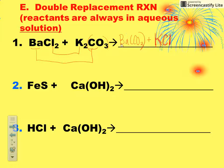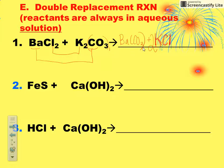Let's go back and check it. We've got one barium here and one barium here. Two chlorines here, so we put a 2 in front of the potassium chloride — that gives two chlorines and also two potassiums. You've got two potassiums on this side as well. One carbonate here and one carbonate there. So the balanced coefficients are 1, 1, 1, 2.